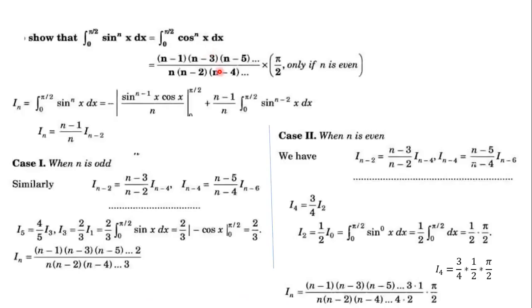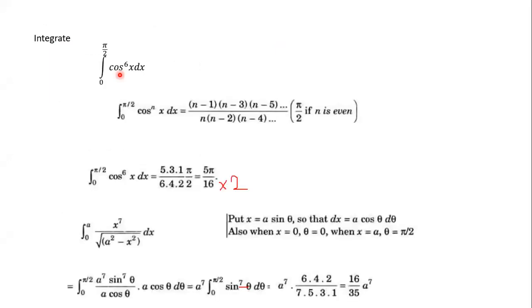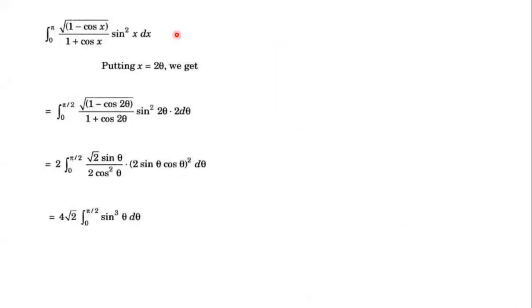So this was just a brief revision for such type of reduction formula. Now let us move towards the reduction formula for the remaining one. We want to solve this integral. The limit is zero to pi: integral of √[(1 minus cos x)(1 plus cos x)] · sin²x dx. Till now, we know only the result of the reduction formula for sin raised to some power or cos raised to some power.